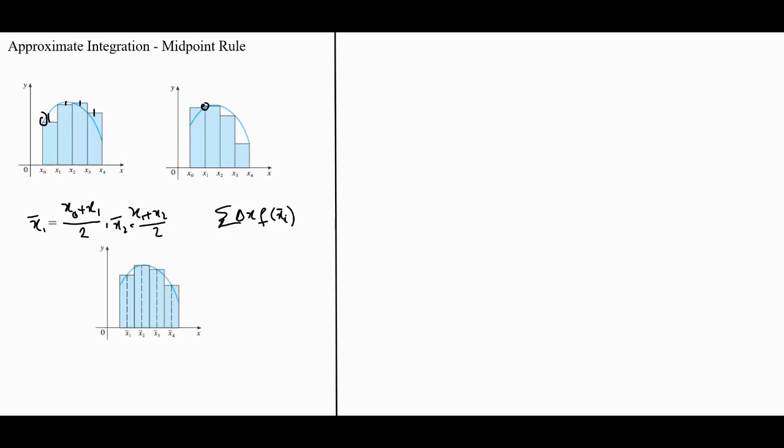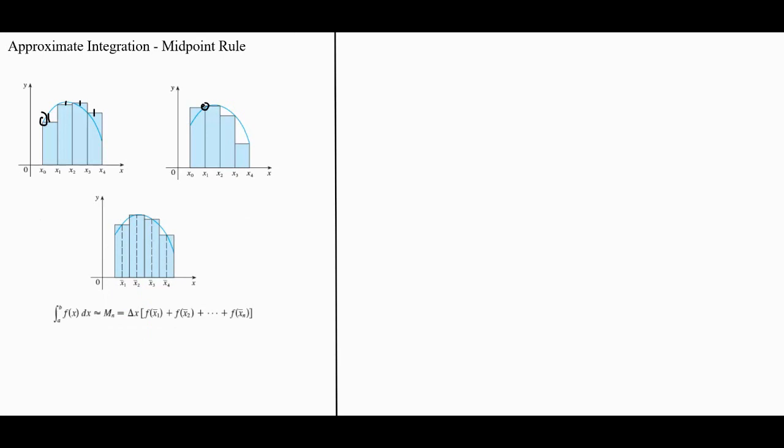So here you can now see what I'm trying to say in the diagram form. So if we take this area, that would mean the area, the integral from a to b fx dx is approximated by m n, which is equal to delta x, the common delta x into fx 1 bar plus fx 2 bar up to fx n bar. So you can see here, as you see in this diagram, as opposed to before where we had essentially, either you can count from 0 to n minus 1 or 1 to n.